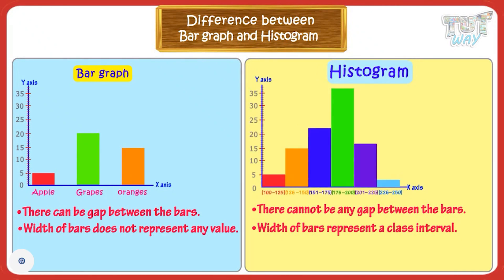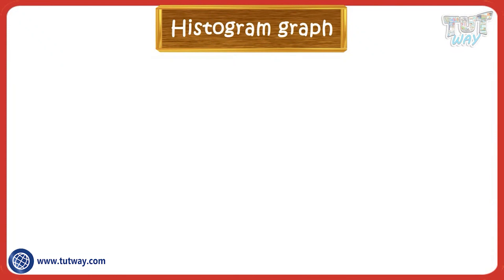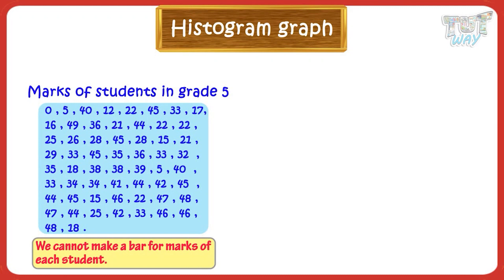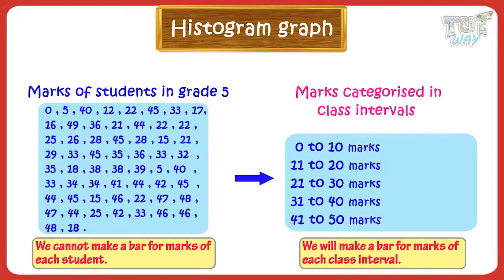Now let's take a few more examples of histograms. We have marks of all the students in Grade 5. We cannot make a bar for each student as there are so many students. So we will make class intervals or categories: students who have got marks in the range of 0 to 10, 11 to 20, 21 to 30, 31 to 40, and 41 to 50 marks. We will make a bar for each class interval rather than for each student.